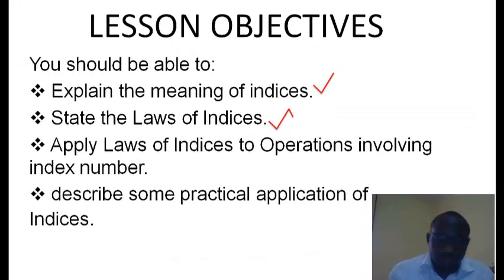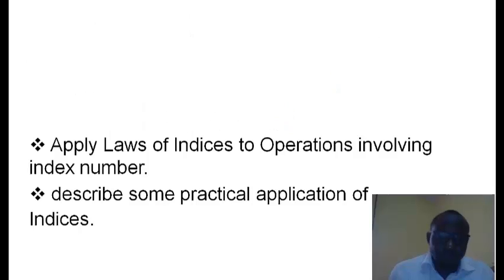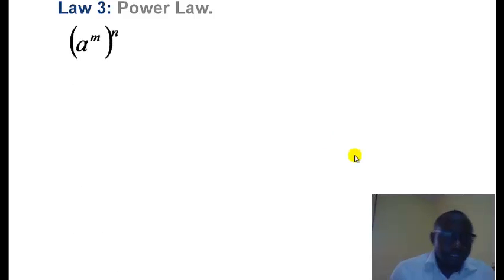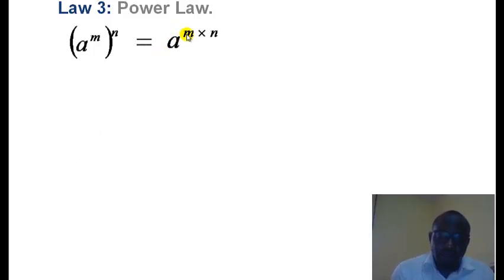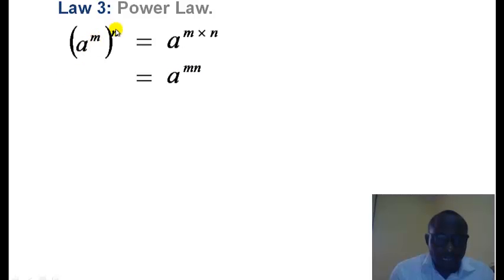In this INVASIS tutorial, we continue with the laws of INVASIS. We look at Law 3, which we call the power law. This law states that a raised to power m, all raised to power n, is equal to a raised to power m multiplied by n — that is, a raised to power mn. This implies that whenever an index number is raised to a power, the resulting transformation is the base raised to the product of the indices involved.